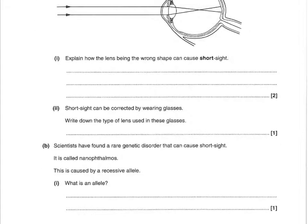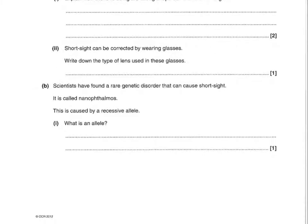Next question says, short sight can be corrected by wearing glasses. Write down the type of lens used in these glasses. That's concave for that one mark. You could also have diverging — diverging would also get the mark there. Next question: scientists have found a rare genetic disorder that can cause short sight called nanophthalmos. This is caused by a recessive allele. What is an allele? That is a version of a gene — one mark for saying a version of a gene.